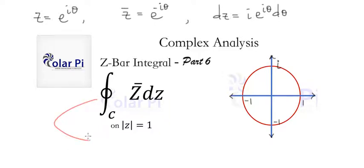So, we say that our integral now is going from theta goes from 0 to 2 pi. So, from 0 to 2 pi of z bar is, right here, e to the negative i theta.